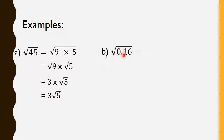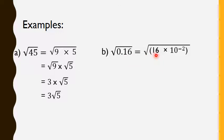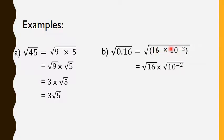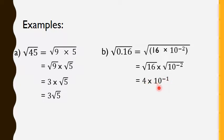Another example: radical 0.16. We know that 0.16 comes from 16 times 10 to the exponent minus 2. So, radical 0.16 equals to radical 16 times radical 10 to the exponent minus 2. Radical 16 — 16 is 4 squared, so radical 4 squared is 4. And radical 10 to the exponent minus 2: we keep the same base and divide the exponent by 2, so minus 2 divided by 2 is minus 1. So, 4 times 10 to the exponent minus 1 equals to 0.4.